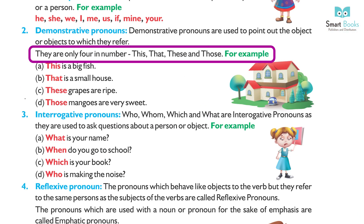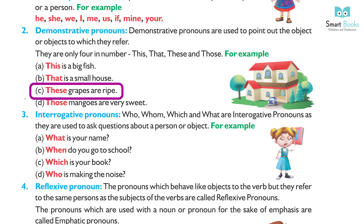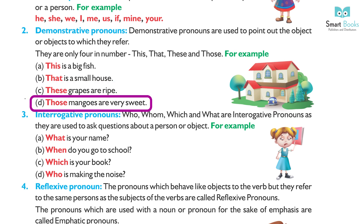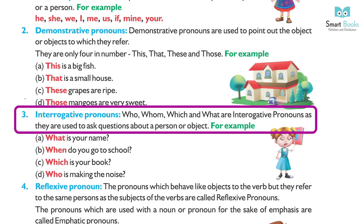The four demonstrative pronouns are: this, that, these, and those. For example: (a) This is a big fish. (b) That is a small house. (c) These grapes are ripe. (d) Those mangoes are very sweet. Three: Interrogative pronouns. Who, whom, which, and what are interrogative pronouns,